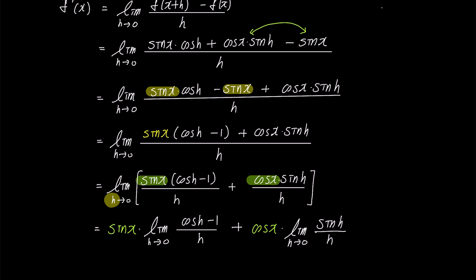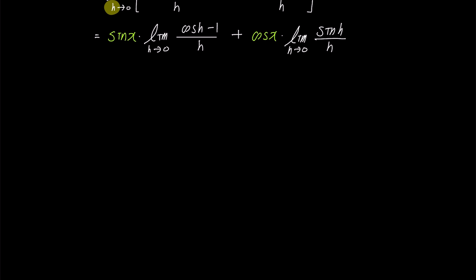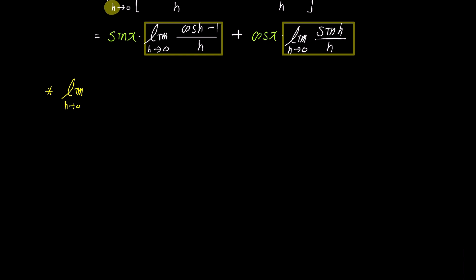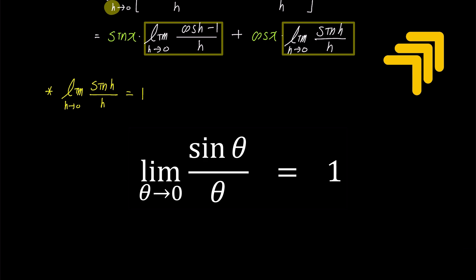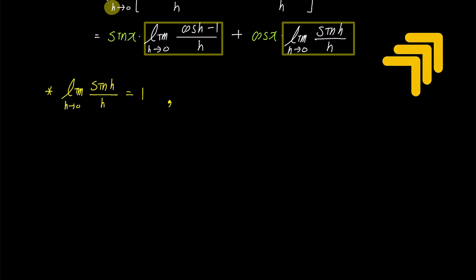If we simplify the expression, we can find the derivative of sine x by determining the values of the two limits inside the yellow boxes. The limit of sine h over h as h approaches 0 is equal to 1. In a separate video, I have provided a detailed proof of why this value is 1, and you can click on the link in the top right corner to view the content.